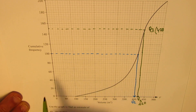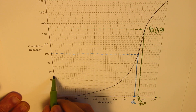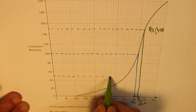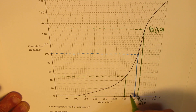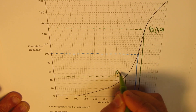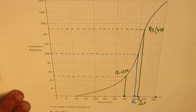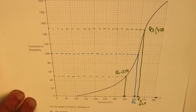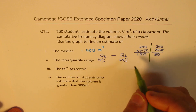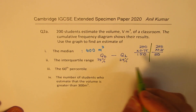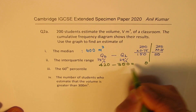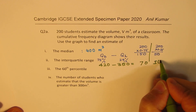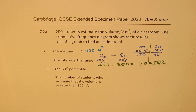Now Q1 corresponds to 50 students. 50 is between 40 and 60 on the cumulative frequency axis, and reading across to the horizontal axis gives a value of 350. So Q1 equals 350. The interquartile range is Q3 minus Q1, which is 420 minus 350. So the IQR is 70.